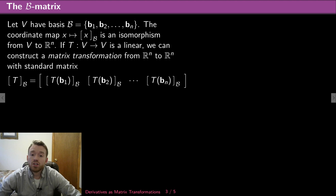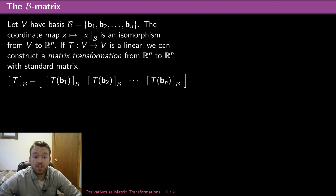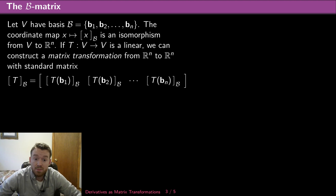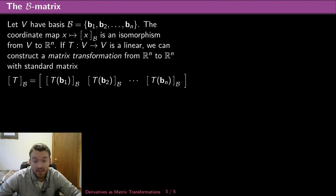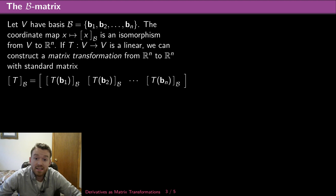The next thing I want to do is talk about the B matrix — just to remind you what the B matrix is. If my space V has a basis consisting of elements B1 through Bn, the coordinate map — that's the map that takes an element x in V and maps it to its coordinates with respect to basis B — is an isomorphism from V to Rn. Isomorphism between two spaces means they behave exactly the same. If I add two elements in V, I can add their associated elements in Rn and everything looks the same.